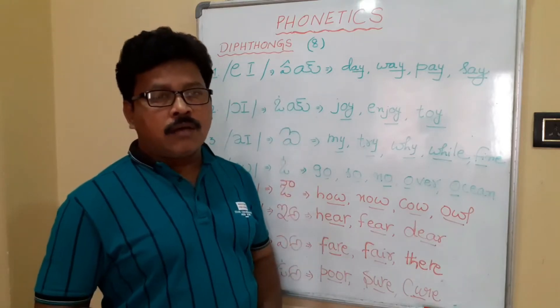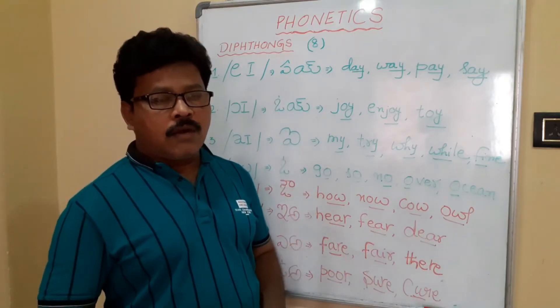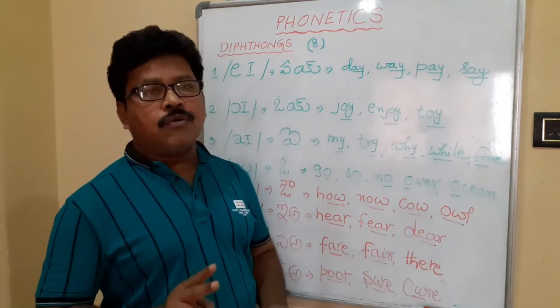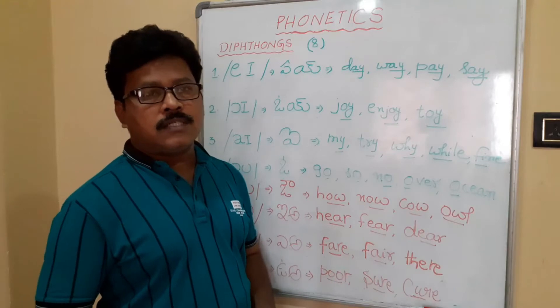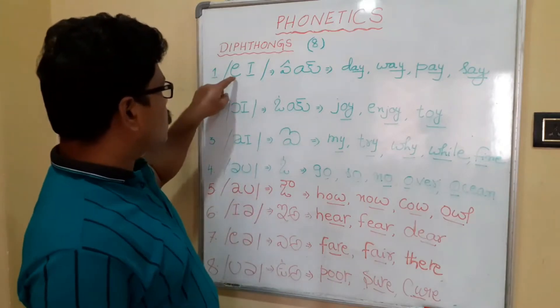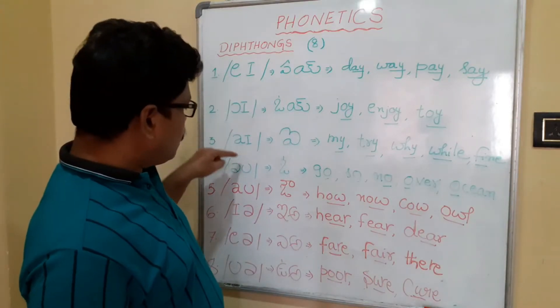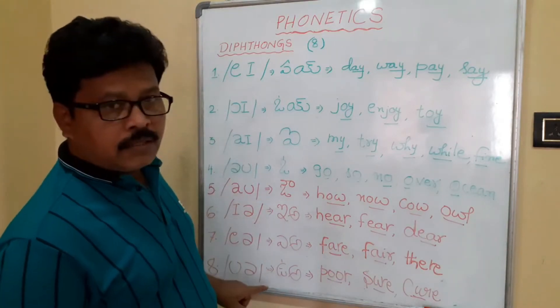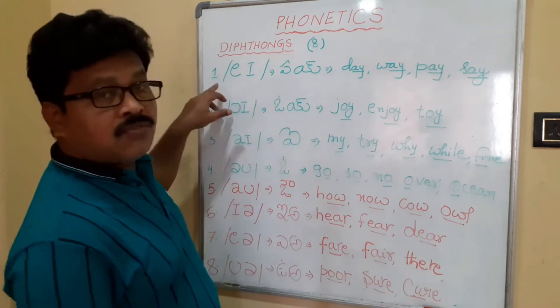What is a diphthong? It is a combination of 2 vowel sounds — 2 symbols are coming together. There are 8 diphthongs in total.